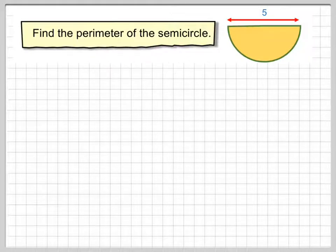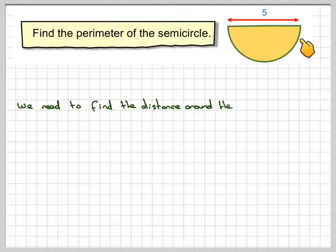Find the perimeter of the semicircle. We've got this semicircle here with this distance of five. We need to find the distance around the whole shape - that's what we mean by the perimeter of this shape.